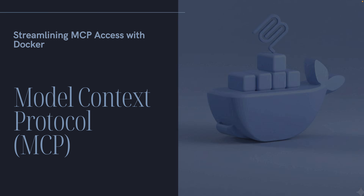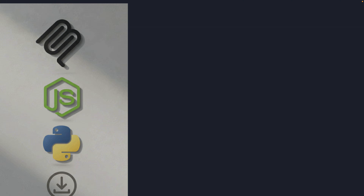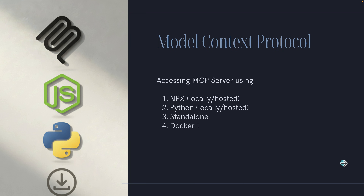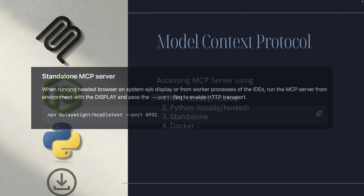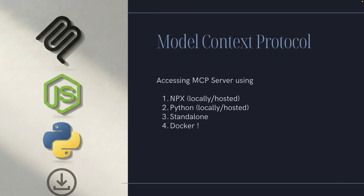We know that we can access a Model Context Protocol server by running them in an npx fashion, which can be running locally or even hosted in the npm package. The same thing goes for Python, and we can run most of the Model Context Protocol servers even standalone — you can just say npx, specify the MCP server name, and it is going to run for you. But now we're going to see how we can run the same thing using a Docker container.